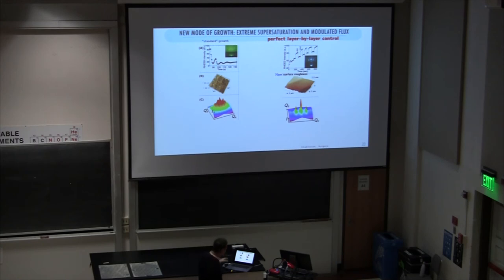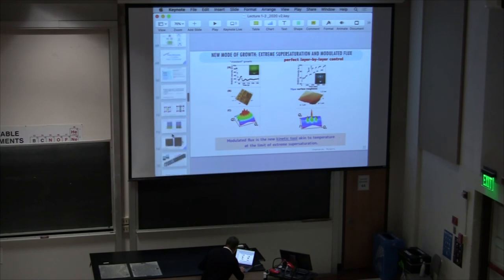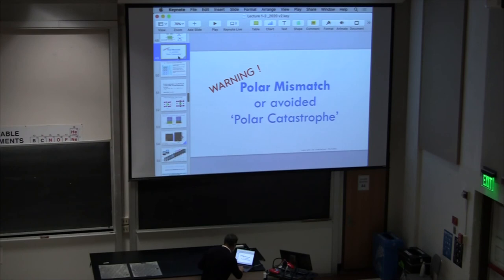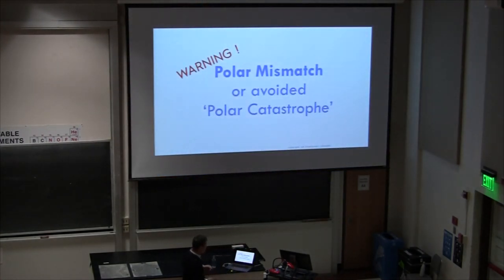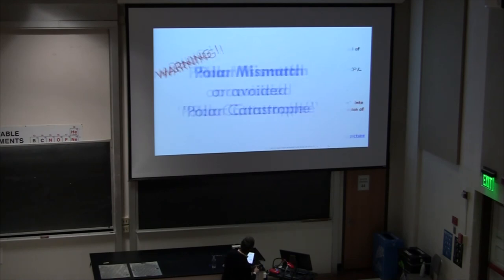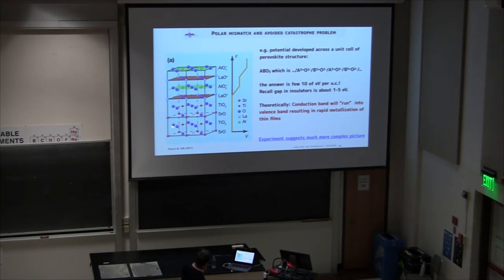We discovered this new mode of growth — highly non-kinetic — in 2011; it was a very nice result. Now I want to touch on something important that you cannot find in crystals: polar mismatch. There's a word of warning here — the polar catastrophe. First propagated by Heli Hwang and other Japanese groups: if your surface is charge neutral but the unit cells of the film you're growing have alternating planes of charge plus and minus, there's a problem.